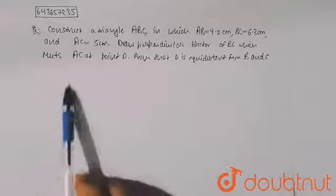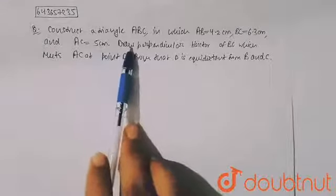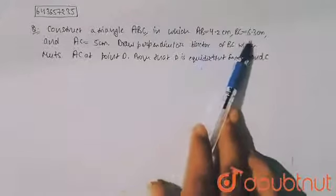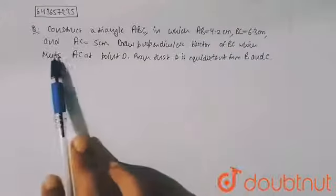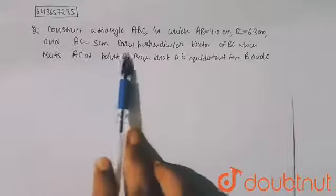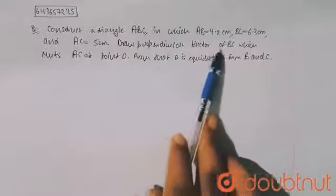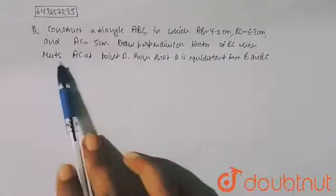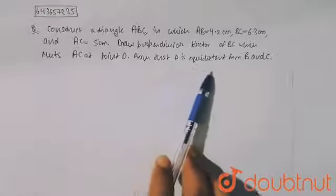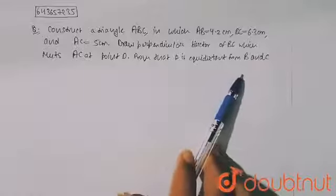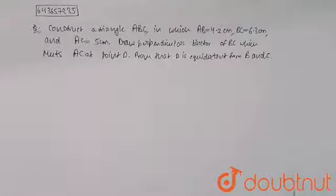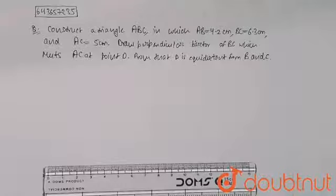...it is given that: construct triangle ABC in which AB equals 4.2 centimeters, BC equals 6.3 centimeters, and AC equals 5 centimeters. Draw the perpendicular bisector of BC which meets AC at point D, and prove that D is equidistant from B and C.